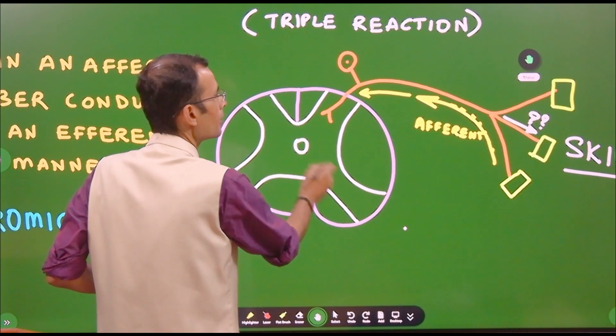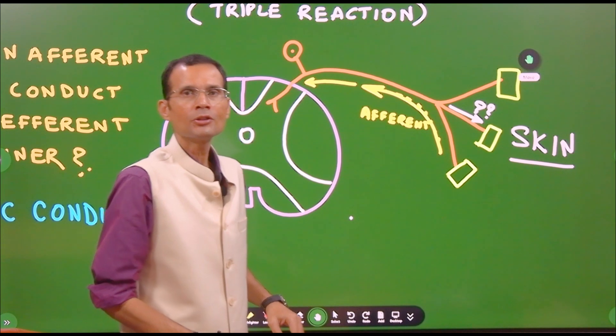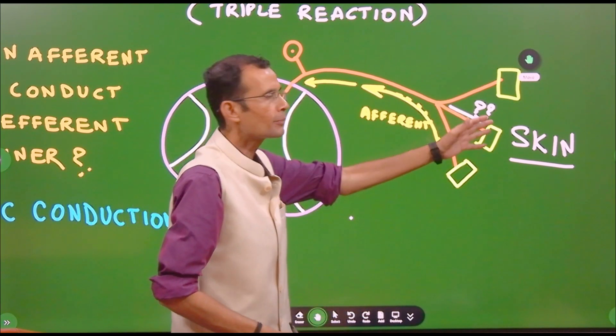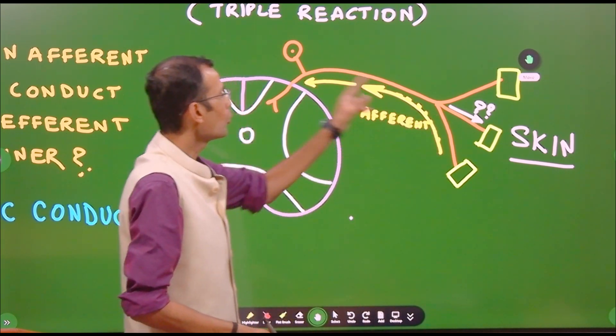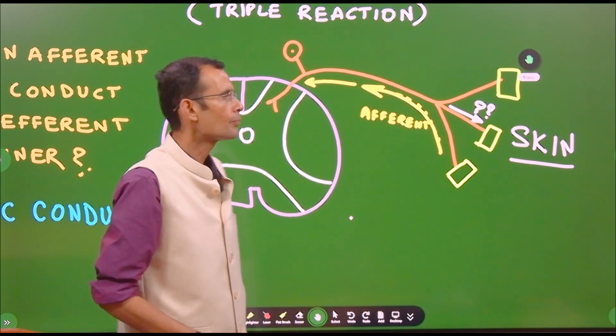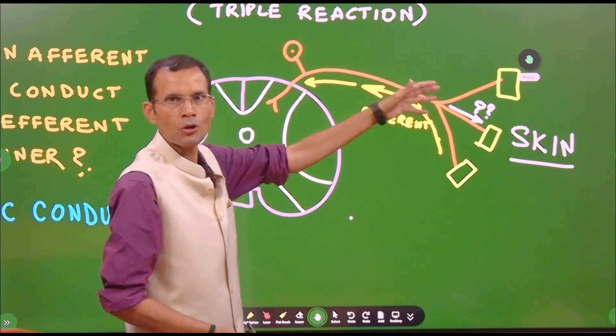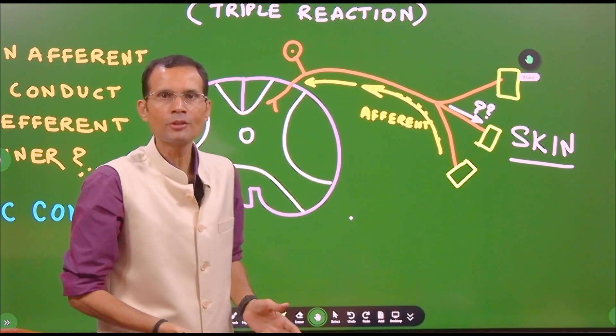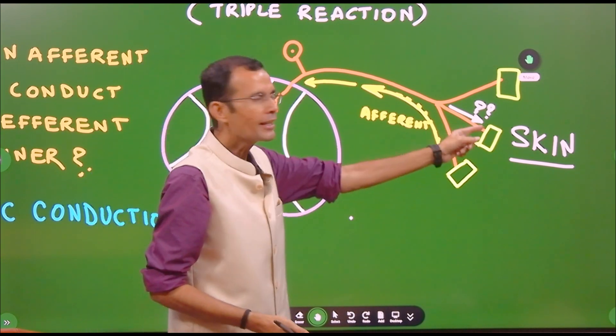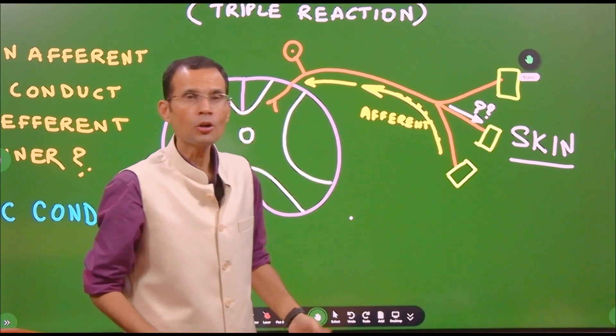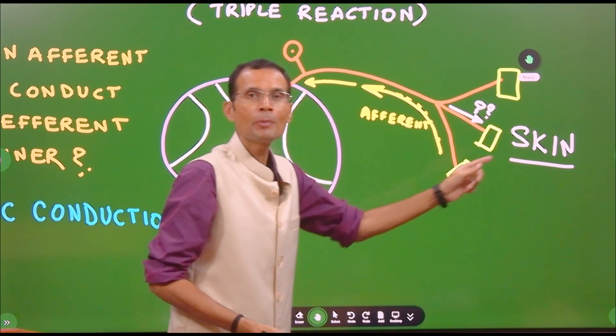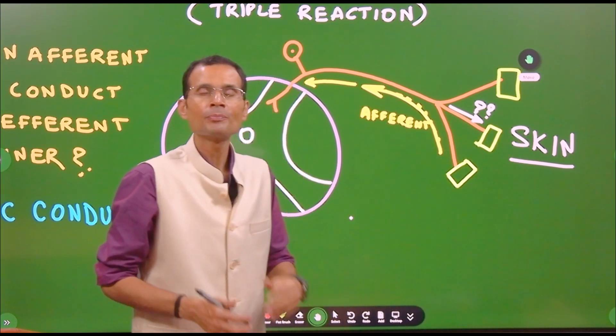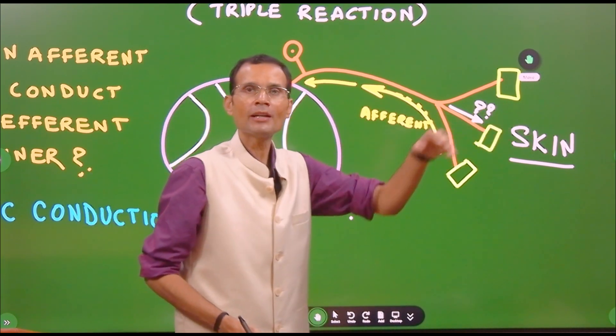Have a look at the diagram. Here is an afferent neuron, sensory nerve fiber. It has got these branches which start from the skin and they go to the spinal cord. All these branches and this neuron is expected to conduct the impulse towards the center. It is an afferent fiber. But you can see here, one branch or maybe even more are conducting the impulse in an antidromic fashion, in the opposite fashion, in the efferent manner towards the periphery.